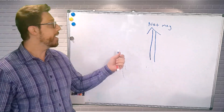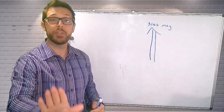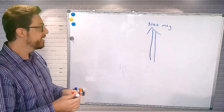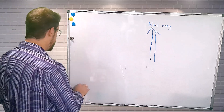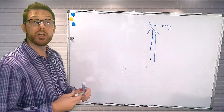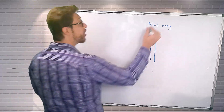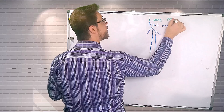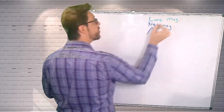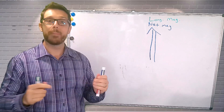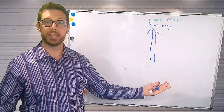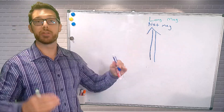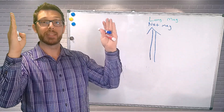When we look at net magnetism, we have our patient lying in the scanner, we've done nothing to the patient yet, and we have net magnetism in our patient. This net magnetism is always going to be in the longitudinal plane. So we can call this longitudinal magnetization. Patient at rest, laying in the scanner, done nothing to the patient yet — that is longitudinal magnetization. We have net magnetism in the longitudinal plane.